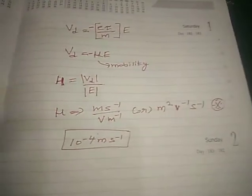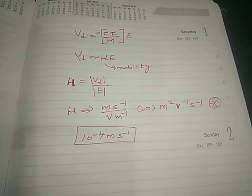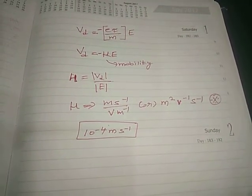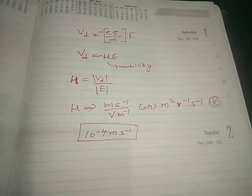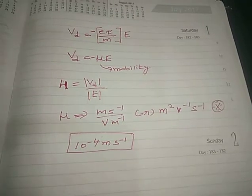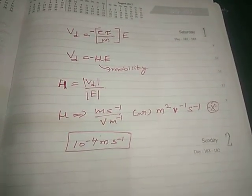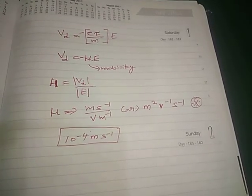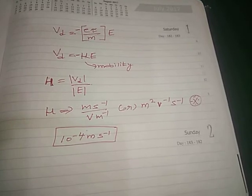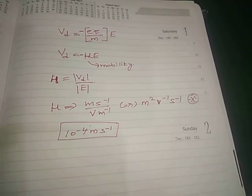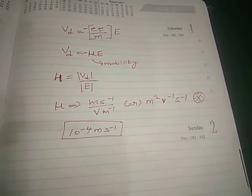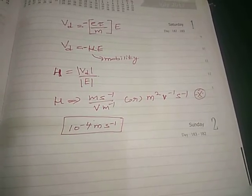A common misconception: people say 'my battery has no charge.' This is wrong. The battery is not a source of charges — it is a source of potential difference. Due to the potential difference, energy is transferred. So the correct statement is: 'my battery's energy is low' or 'the battery's ability to provide energy is low.' The battery transfers electrical energy, it does not store or provide charge.